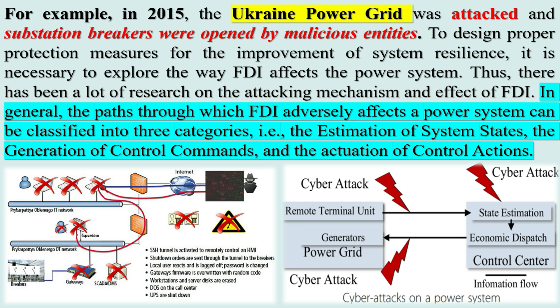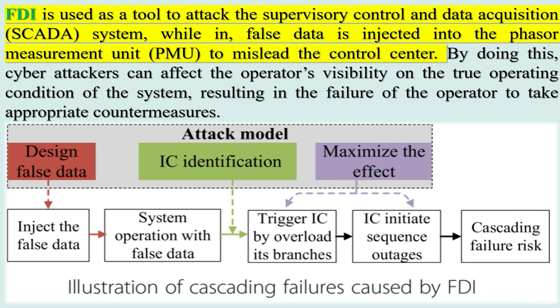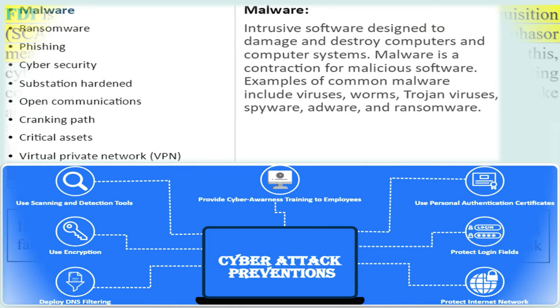There has been a lot of research on the attacking mechanism and effect of FDI. The paths through which FDI adversely affects a power system can be classified into three categories: the estimation of system states, the generation of control commands, and the actuation of control actions. FDI is used to attack the supervisory control and data acquisition (SCADA) system, while false data is injected into the phasor measurement unit (PMU) to mislead the control center, affecting the operator's visibility and resulting in failure to take appropriate countermeasures.